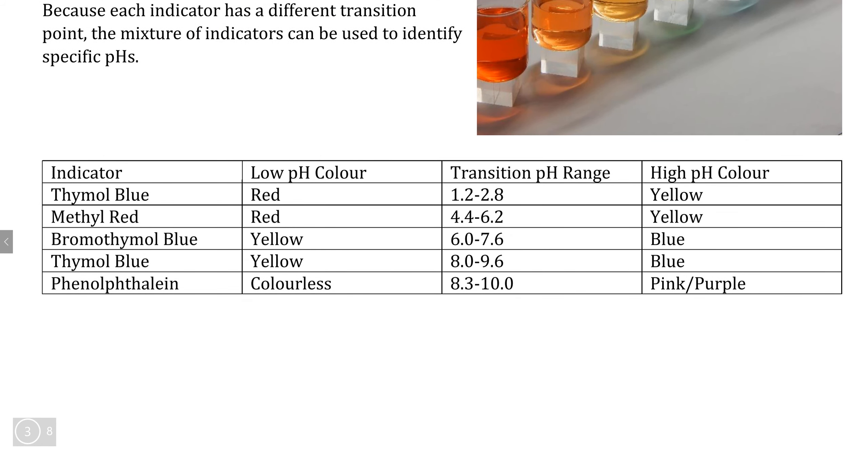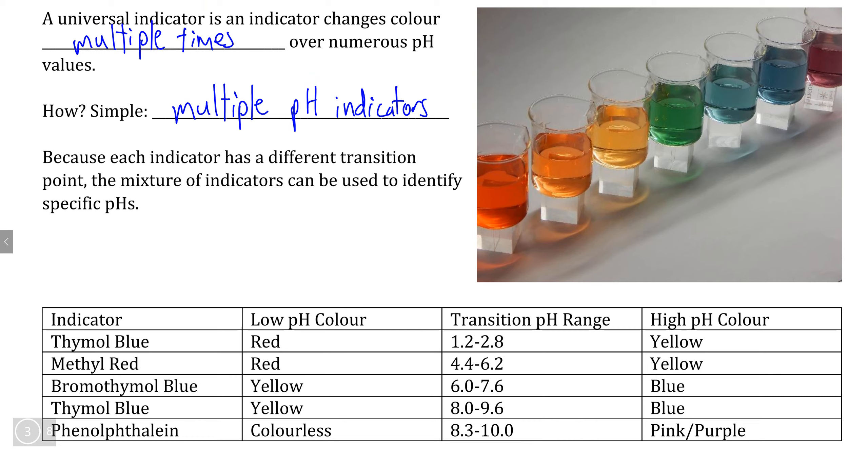So in particular, universal indicator is actually a mixture of four different indicators that change color and mix together in order to form the most predominant colors of the visible light spectrum. So we have red, orange, yellow, green, blue, deep blue, which some people consider indigo, and violet all the way on the far right here.